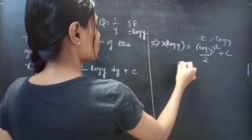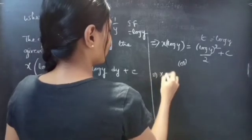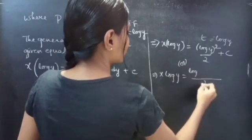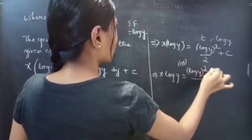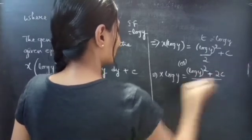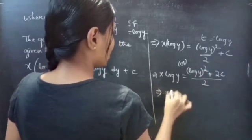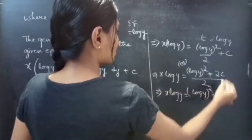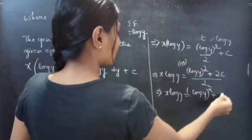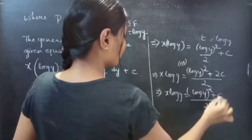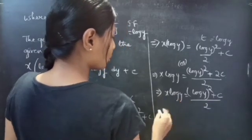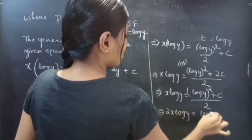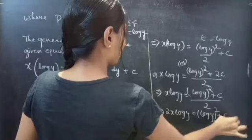So x·log(y) equals log(y) whole square by 2 plus c. Taking LCM of 2, we get 2x·log(y) equals log(y) whole square plus 2c, where 2c is again a constant. Therefore the general solution is 2x·log(y) equals log(y) whole square plus c.